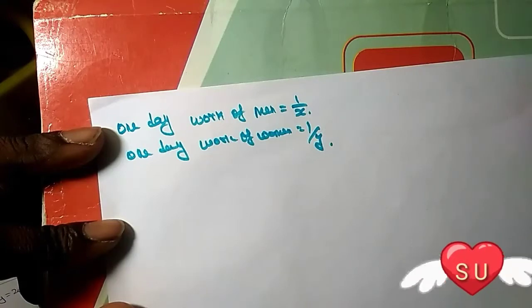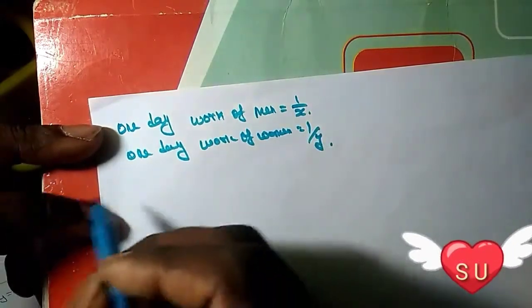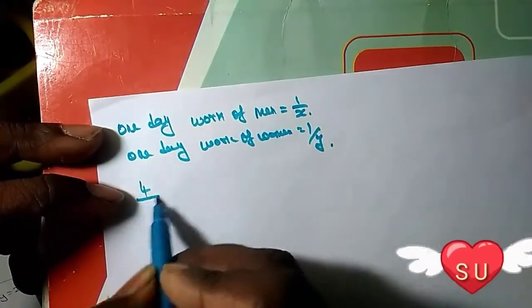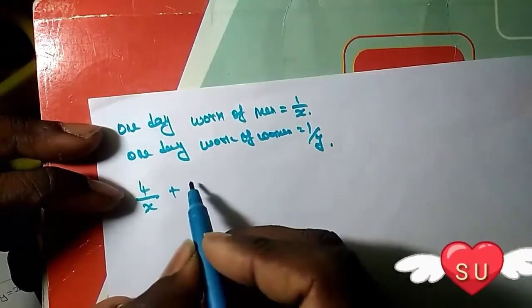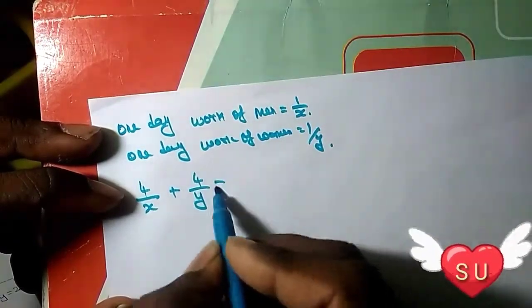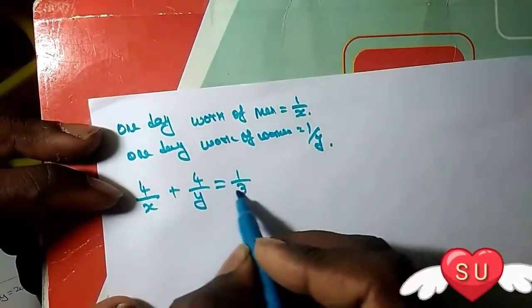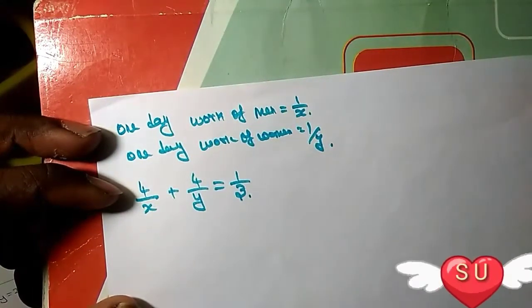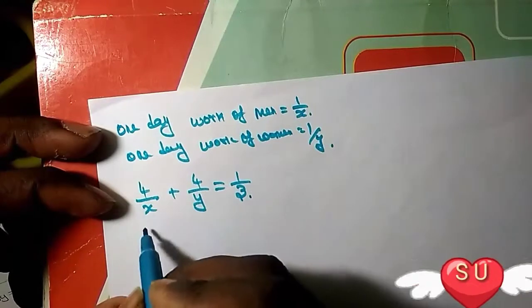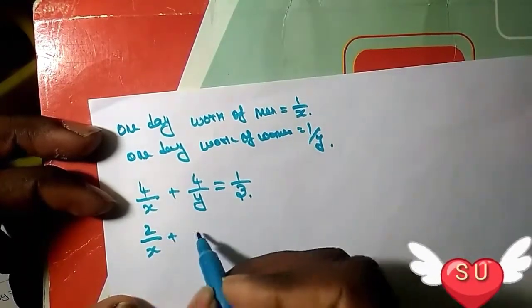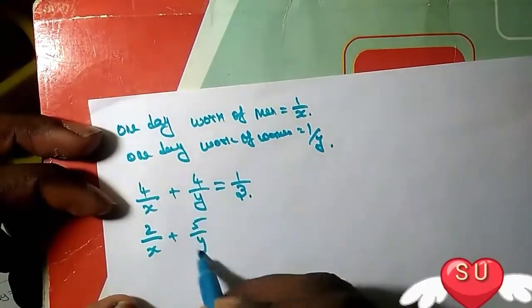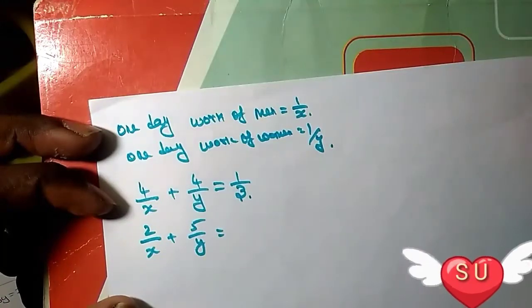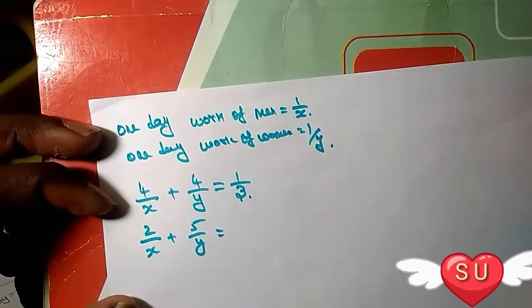So one day work is one by three. Four men's one day work plus four women's one day work equals one day by three days. Next, two men and five women - two by X, five by Y - finish the work jointly in four days.